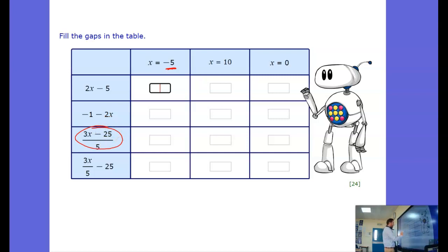We've got 3 lots of x so 3 brackets, x is minus 5, then take away 25 and then finally divide the answer by 5.